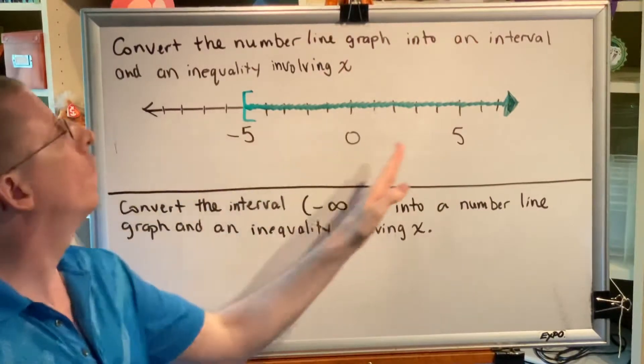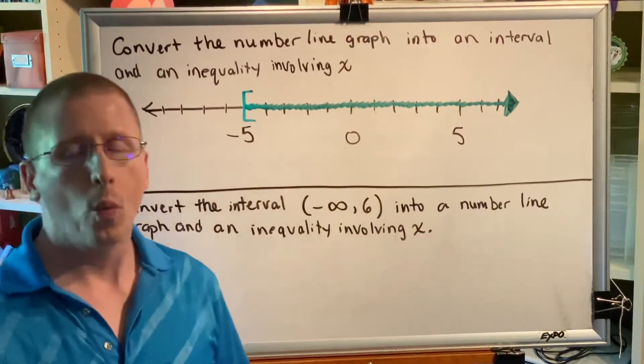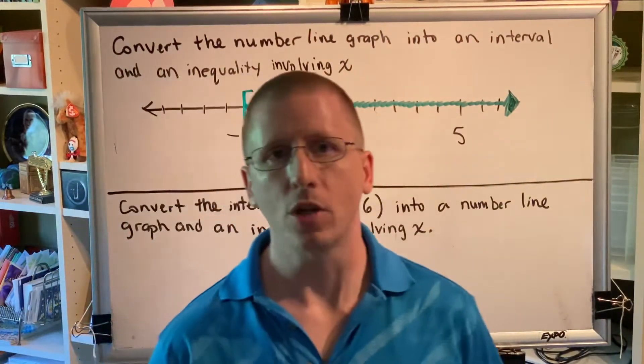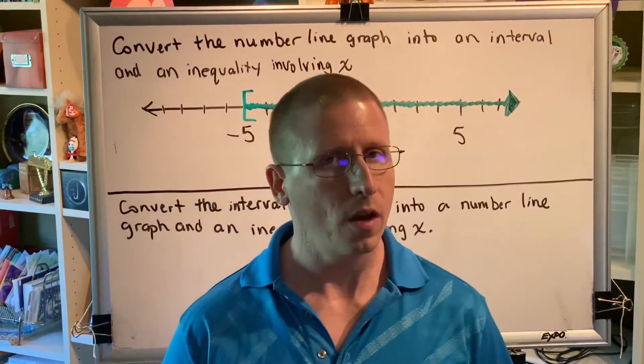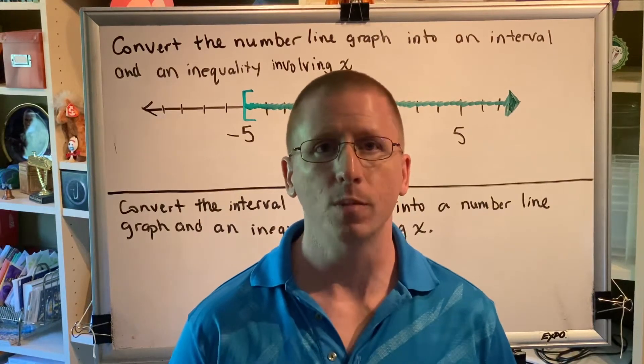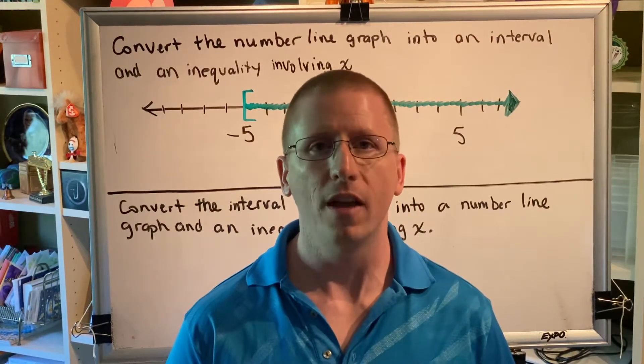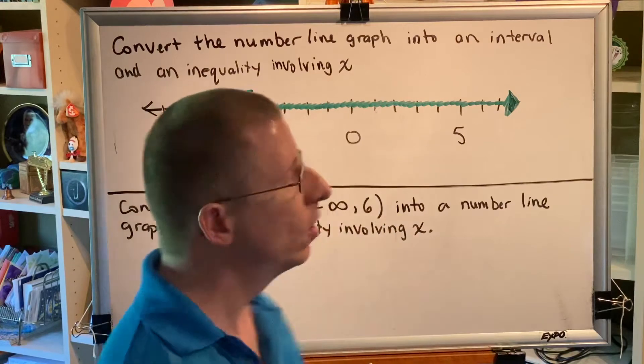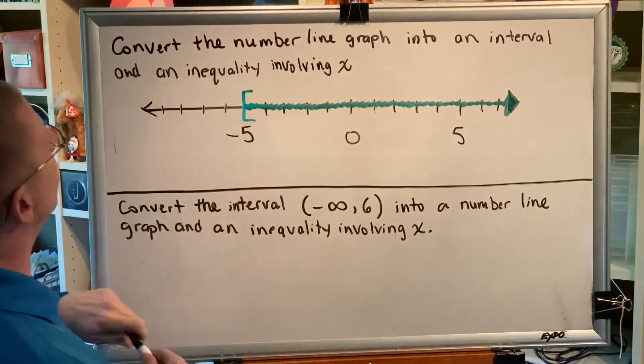So this number line is communicating that we want all of the numbers that are negative 5 or larger. When we write an interval, intervals must always be written with the smallest quantity on the left and the largest quantity on the right. On a number line, the smallest quantity is the shaded value that is closest to the left side.